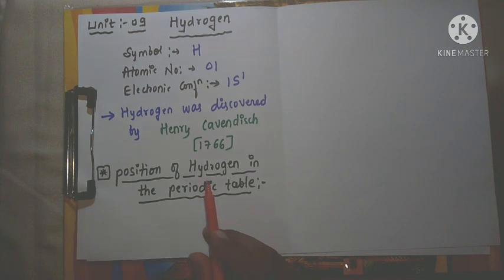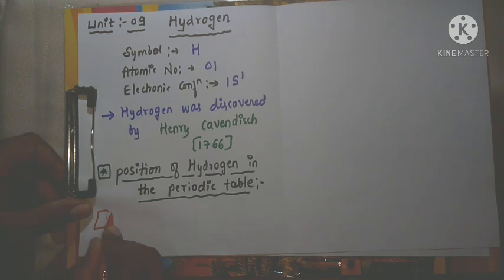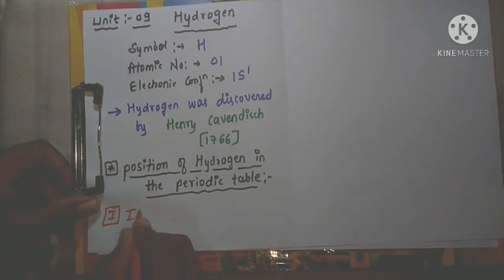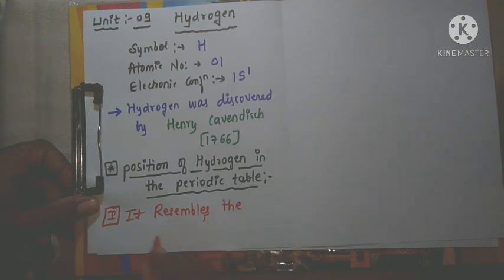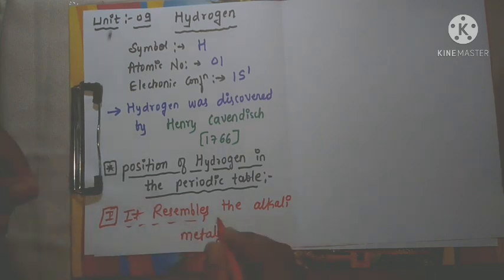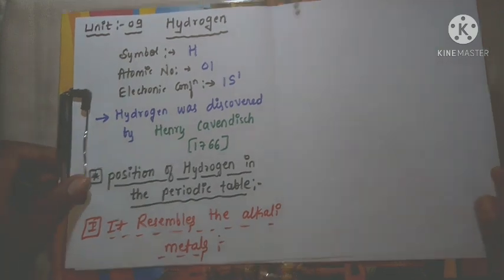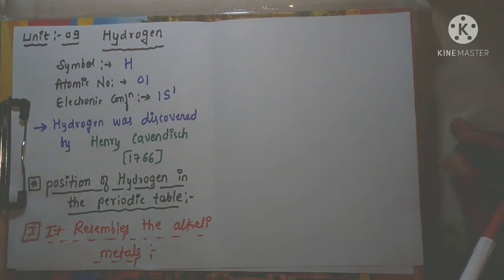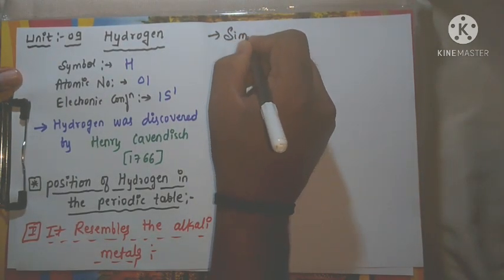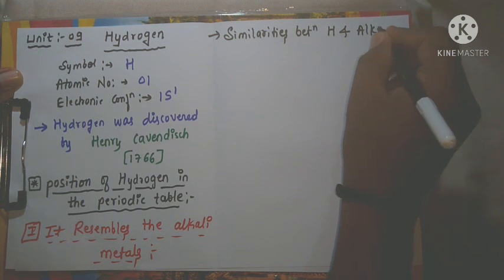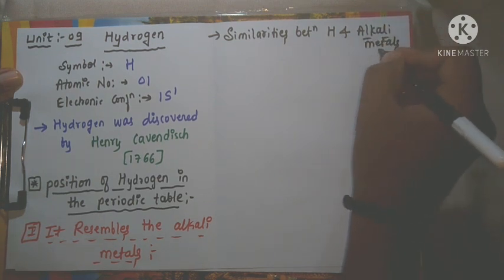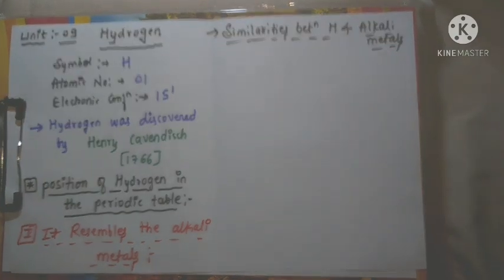Hydrogen shows similar properties to the alkali metals — that is, hydrogen resembles the alkali metals. We will now discuss the similarities between hydrogen and the alkali metals. Alkali metals are group 1 elements. We will see the similarities one by one.